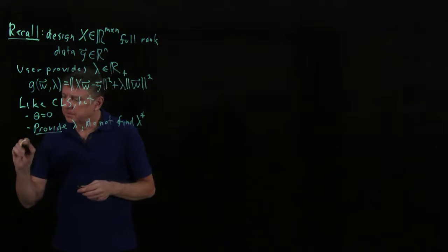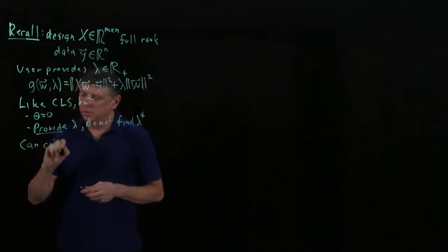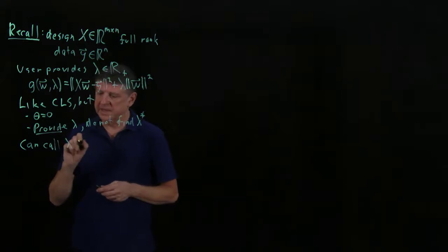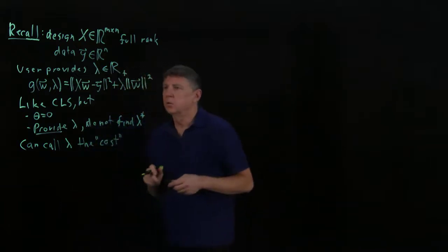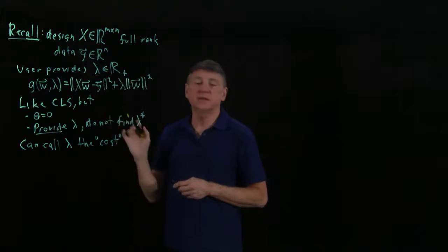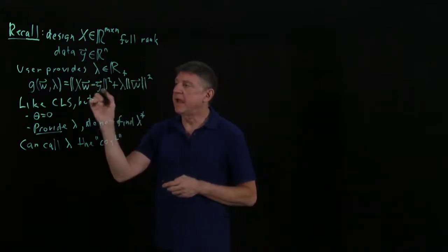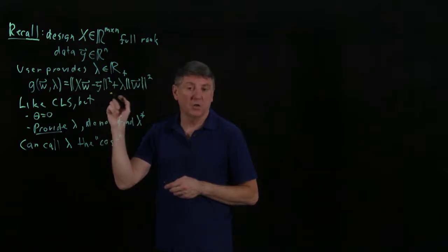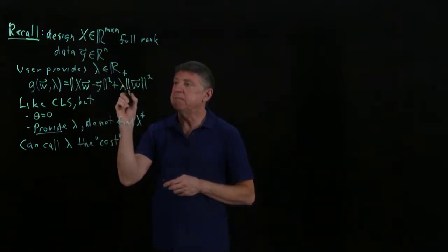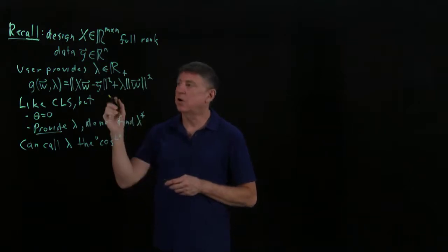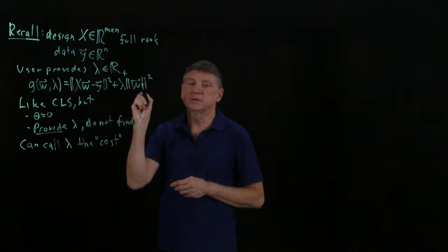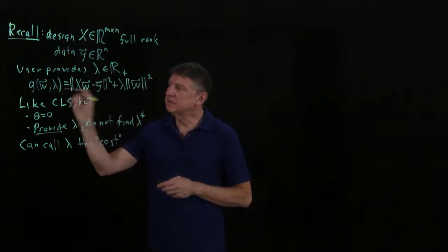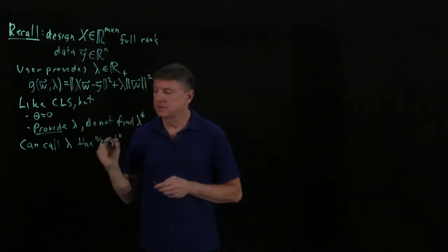Some people will call lambda the cost. If lambda equals zero, this is an unconstrained optimization problem with zero cost. As lambda increases, there's a higher cost of using the unconstrained result, and the squared norm of the result starts to be important. That is why lambda is sometimes called the cost.